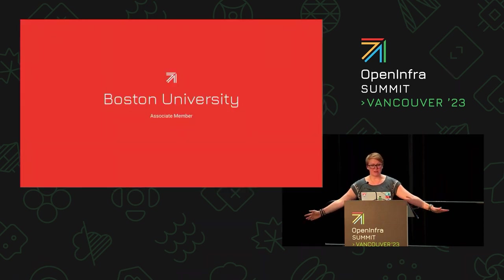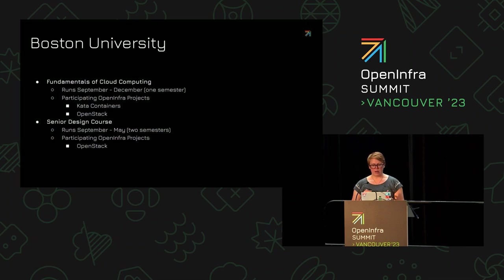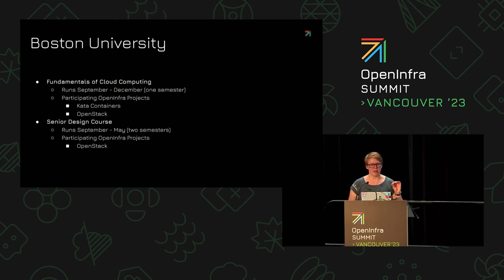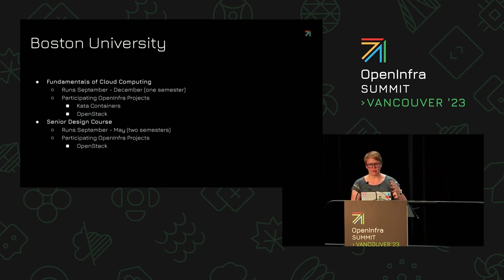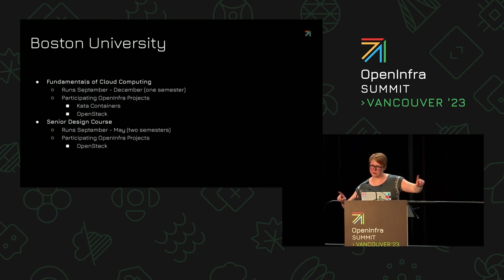First, we have Boston University, who are an associate member of the OpenInfra Foundation. There are two different programs run regularly at Boston University that we've participated in. The one that happens most often is their Fundamentals of Cloud Computing course, which runs September through December for a single semester. We've had both OpenStack and Kata Containers participate. Community members propose a project to the professors, who present it to students. Students pick a project and four to five students get paired with it.